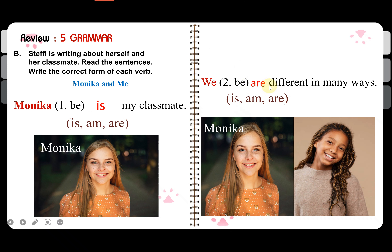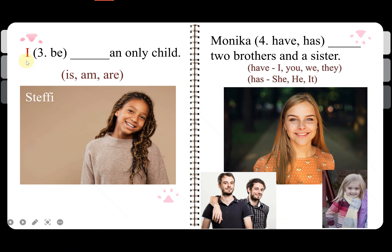So, 'we are different in many ways.' The verb to be used with 'I' is 'am.' So: I am only shy.